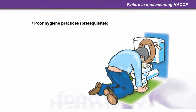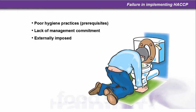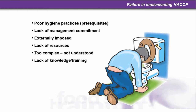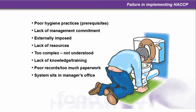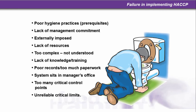Failure in implementing HACCP could be down to poor hygiene practices, which are prerequisites as we looked at in an earlier module. Other causes include lack of management commitment, externally imposed systems, lack of resources, being too complex or not understood, lack of knowledge or training, poor records, too much paperwork, the system sitting in the manager's office, too many critical control points, and unreliable critical limits.